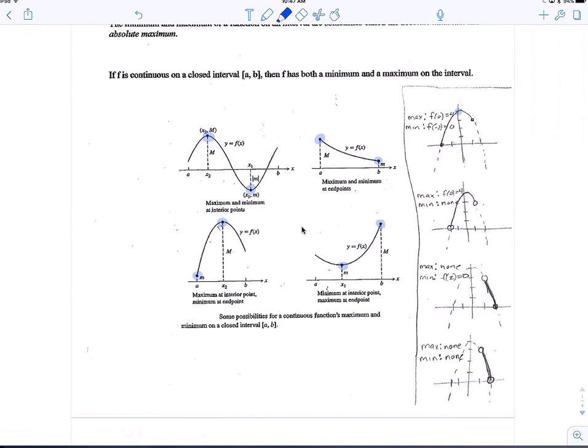The min value occurs at negative 2 and is equal to 0. So the y value equals 0, but it occurs at the x value negative 2.